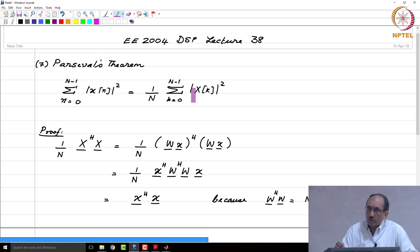However, what you can do is you can redefine your DFT by splitting this 1 over n which was there in the inverse transform. You can split this factor as 1 over root n in the forward transform and 1 over root n in the inverse transform.